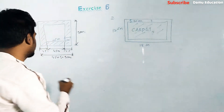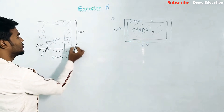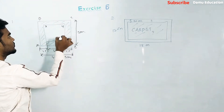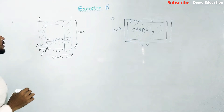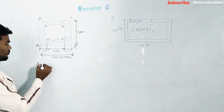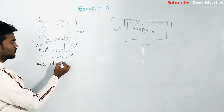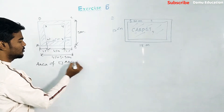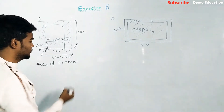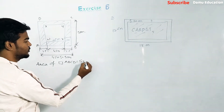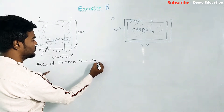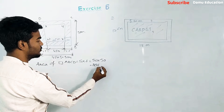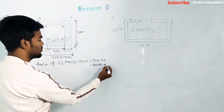Let's label the outer square ABCD and the inner square XYZW. The area of square ABCD equals side times side, which is 50 meters times 50 meters, giving 2500 meter square.